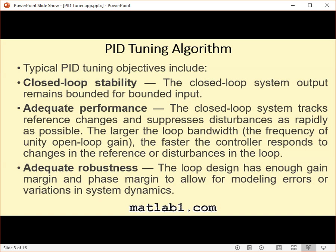For a given robustness (minimum phase margin), the tuning algorithm chooses a controller design that balances the two measures of performance: reference tracking and disturbance rejection. You can change the design focus to favor one of these measures using the design focus option of the pidtune command line or the options dialog box in PID Tuner. When you change the design focus, the algorithm attempts to adjust the gains to favor either reference tracking or disturbance rejection, while achieving the same minimum phase margin. The more tunable parameters there are in the system, the more likely it is that the PID algorithm can achieve the desired design focus without sacrificing robustness.